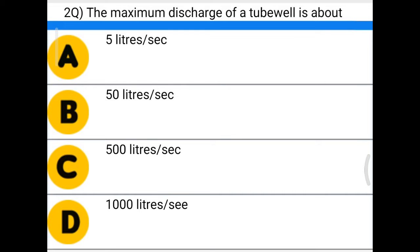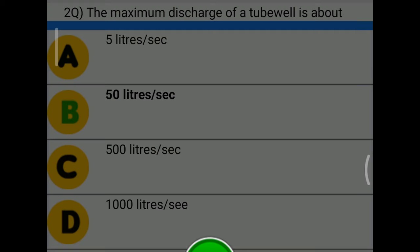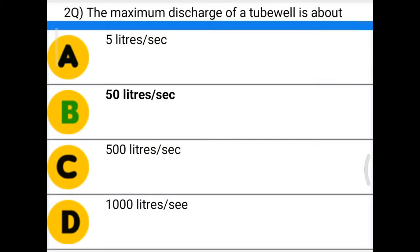Next question: the maximum discharge of a tube well is about — option A: 5 liters per second, option B: 50 liters per second, option C: 500 liters per second, option D: 1000 liters per second. The correct answer is option B, 50 liters per second.